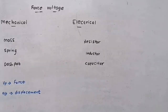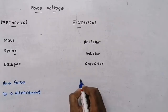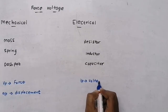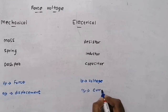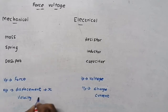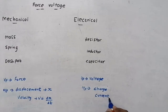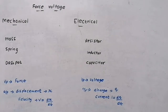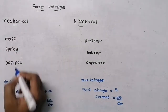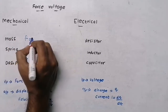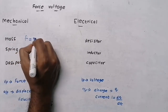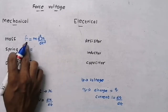In force-voltage analogy, the mechanical input is force and the corresponding electrical input is voltage. The output in the electrical system is current. In the mechanical system, displacement is x and velocity v = dx/dt. Likewise in the electrical system, charge is q and current i = dq/dt. For each mechanical element, the input is force.